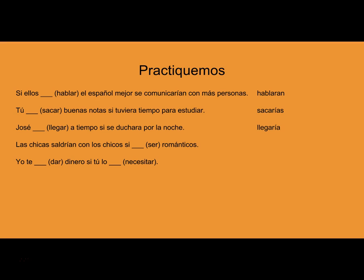José llegaría a tiempo si se duchara por la noche. He would arrive on time — we need the conditional to express what he would do. Las chicas saldrían con los chicos si fueran más románticos. The imperfect subjunctive of ser is fueran for los chicos.